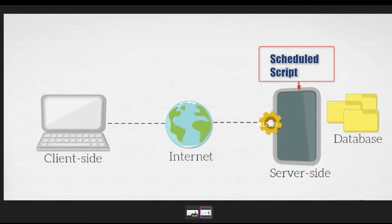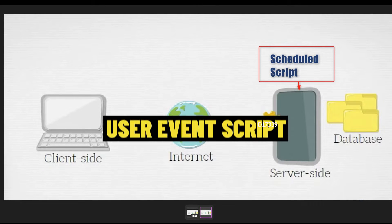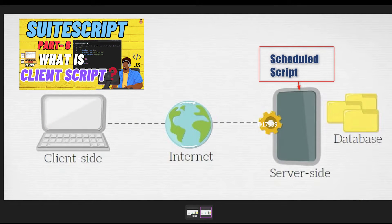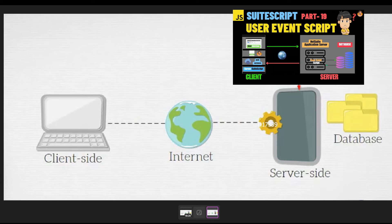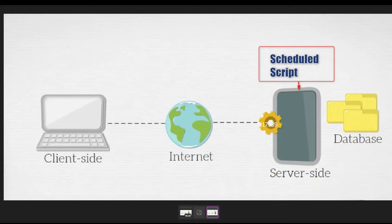Previously we have seen different scripts like user event script and client script. Client script usually takes some interaction like selecting the customer, adding line level data, and saving the record. User event script also triggers whenever we save or load a particular record. But schedule script, as the name says, works on a schedule basis — it runs as per the schedule defined in the script deployment record and processes the logic we have written.